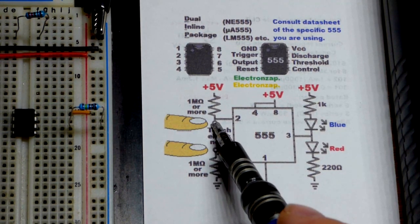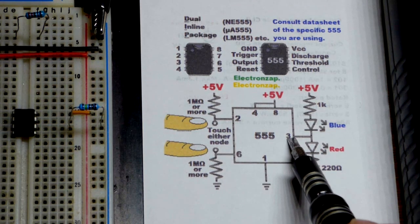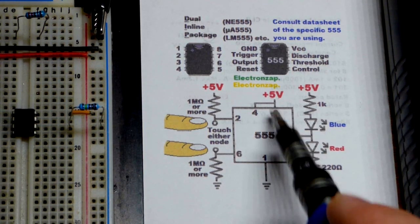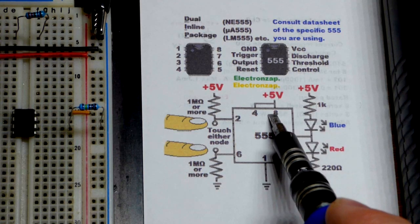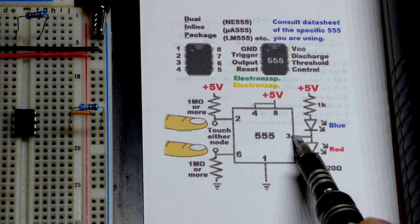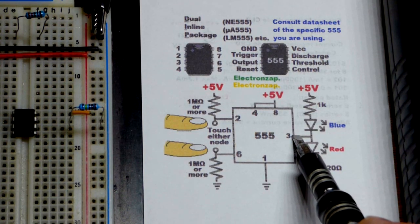We're going to use touch to control the output of the 555 timer. So the output is high, that means it connects as close to 5 volts as it can. Not terribly well, but decently well.